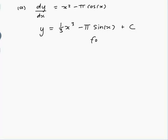Now how do we figure out what c is? We're told that y(0) is 1. y of 0 would be (1/3) times 0 cubed minus π times sin(0) plus c, which is equal to 1. And 0 cubed is 0, sin(0) is 0, so c equals 1.